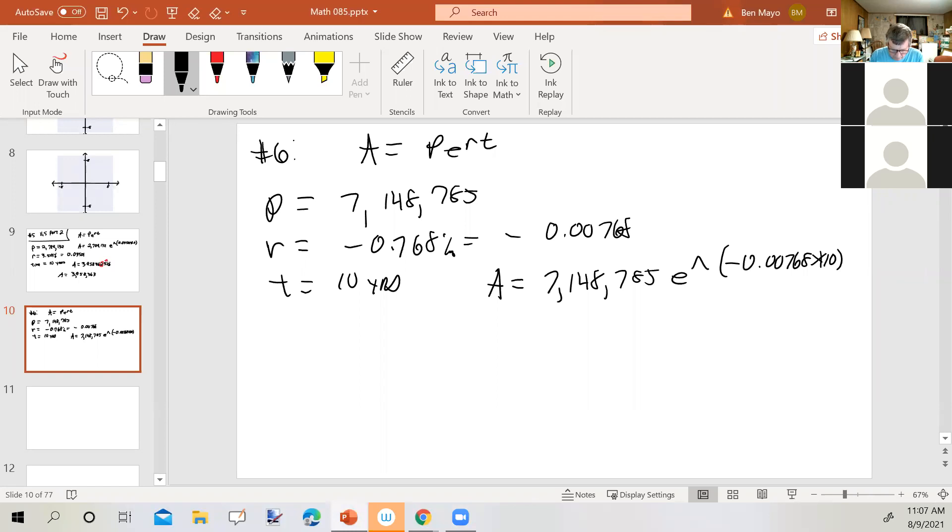Our equation becomes A equals 7,148,785 times E to the negative 0.00768 times 10 power. So we will go to our calculator. 7,148,785 times E to the negative 0.00768 times 10, close it up, push the equal sign. We get 6,620,311.427. We're going to round to the nearest whole integer, the four rounds down. So we get 6,620,311. All right with that. Yep.